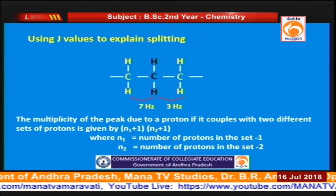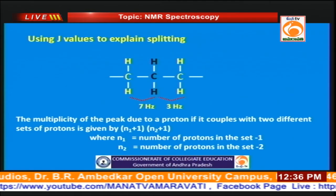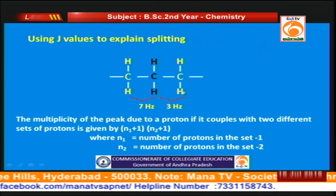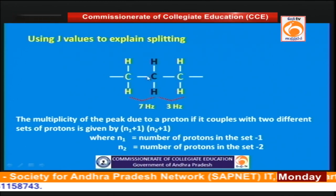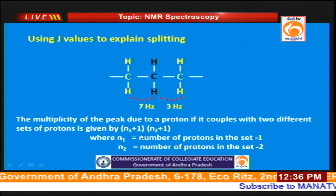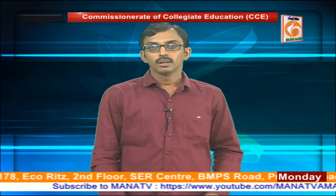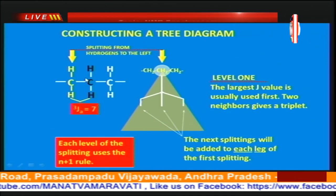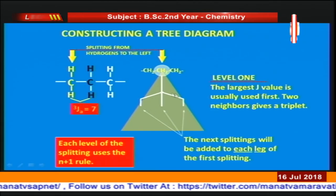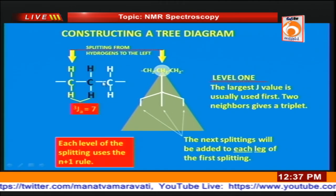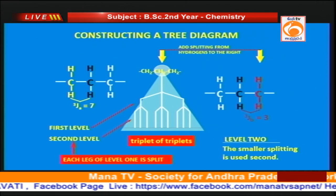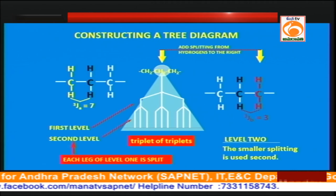Now let us see how J values explain the splitting. The methylene protons of interest undergo coupling with two different types of protons — some protons couple strongly (J = 7 Hz) and others couple less strongly. When there are two different sets of protons, we use the formula (N₁ + 1)(N₂ + 1) for the number of lines. First, the methylene protons couple with the protons having J = 7 Hz to give a triplet, and then each line in the triplet is further split by the other set of protons, giving a triplet of triplets — nine lines in the spectrum.